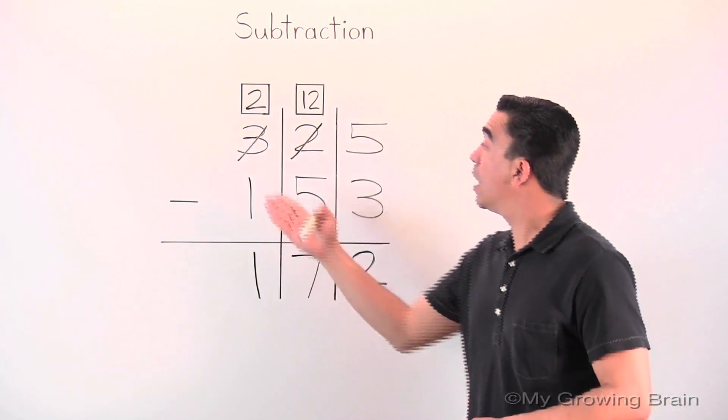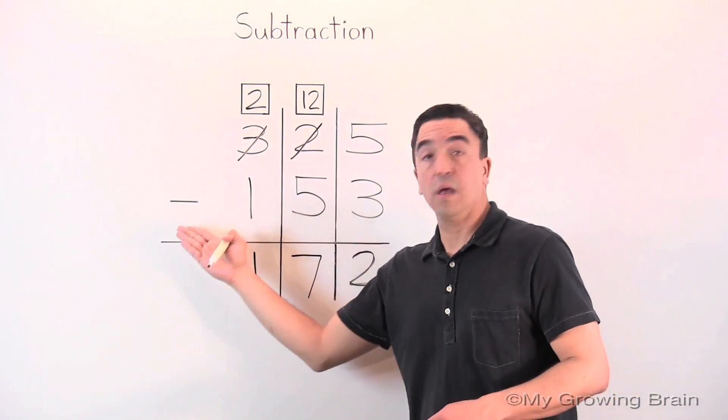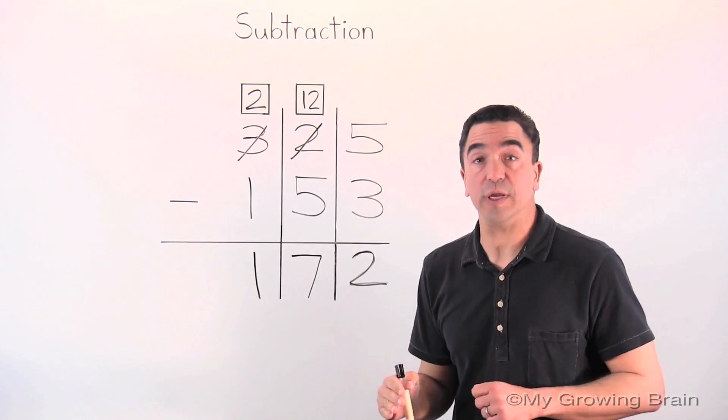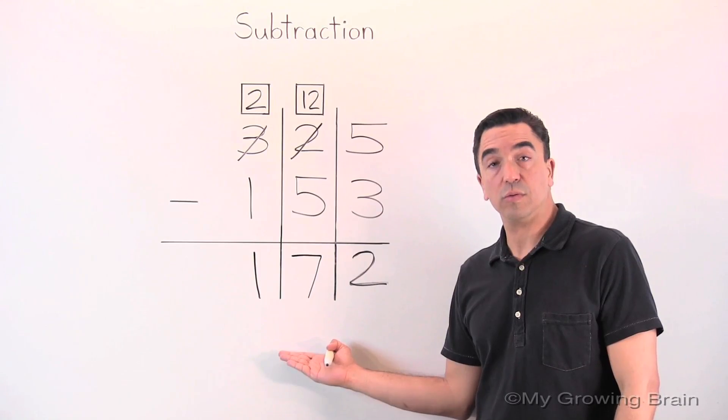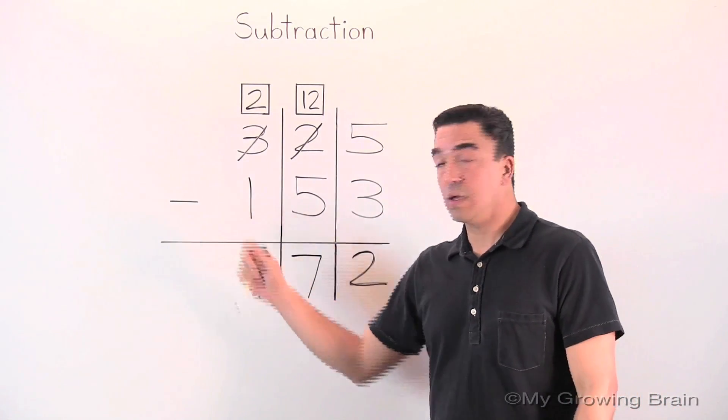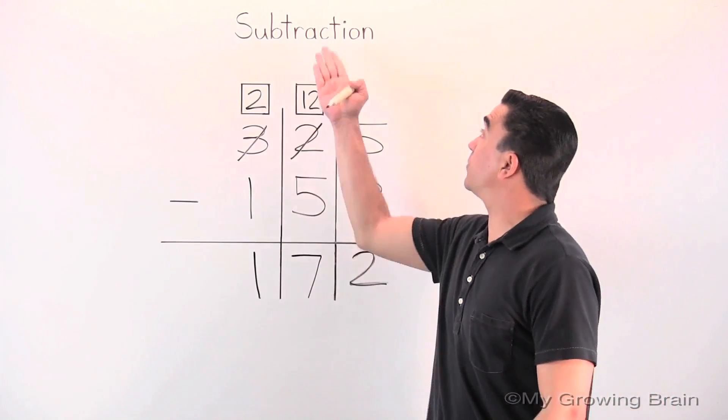So, three hundred twenty-five minus one hundred fifty-three gives us a difference of one hundred seventy-two. Don't forget the difference is the answer to a subtraction problem. That concludes our lesson on subtraction.